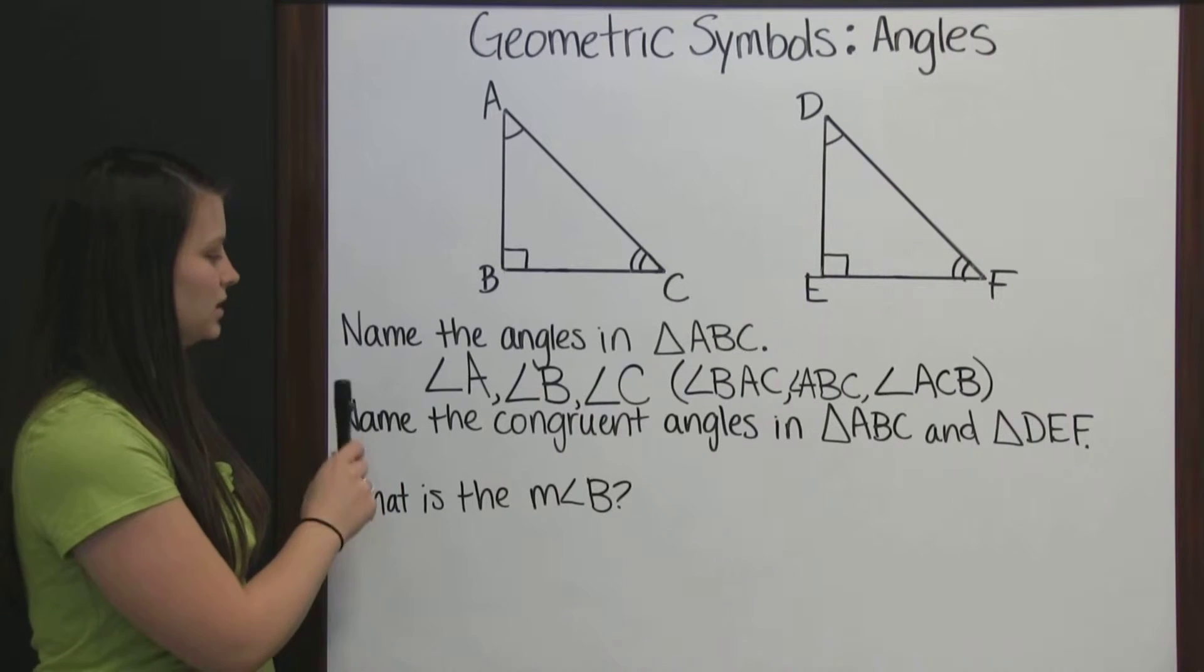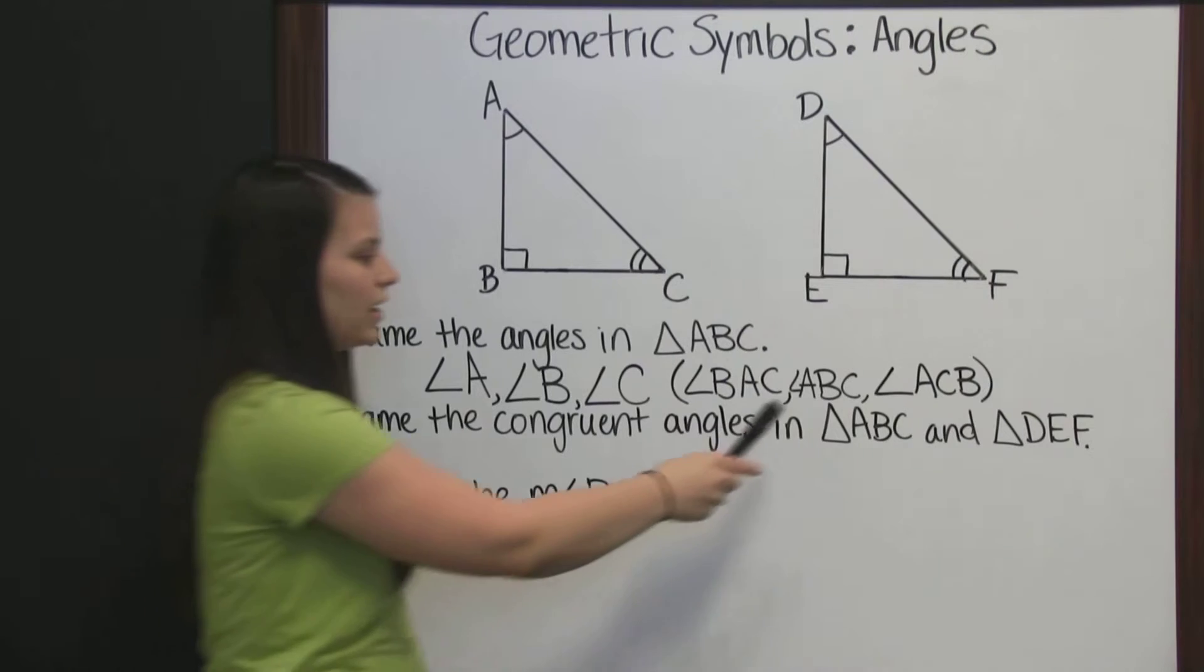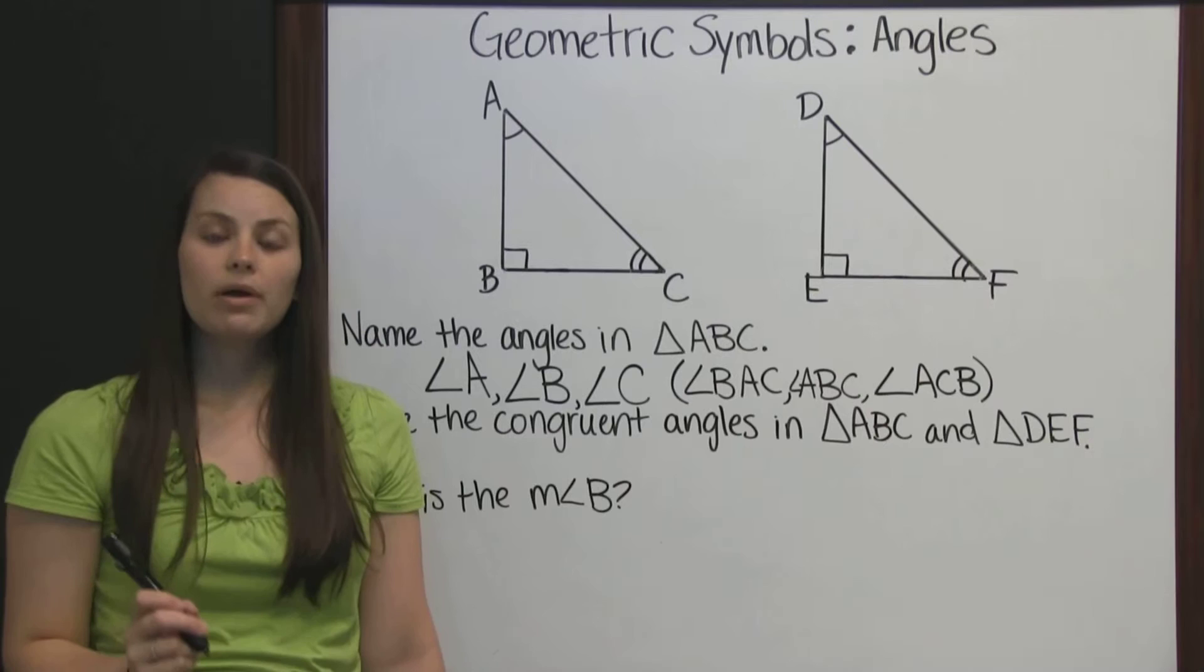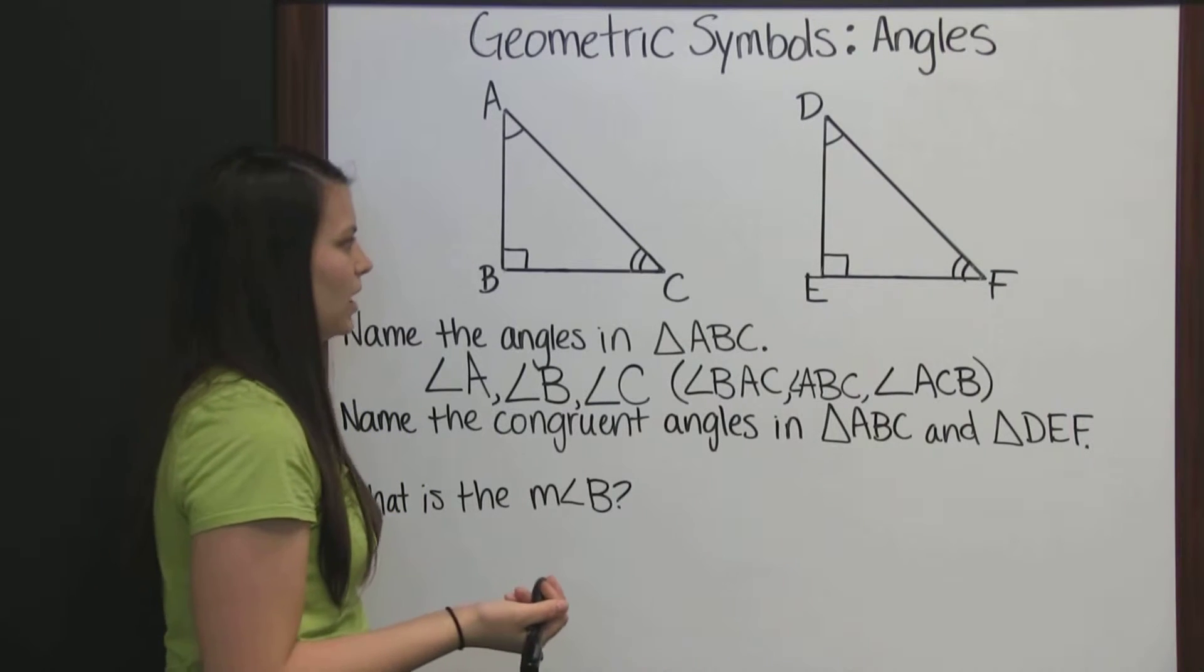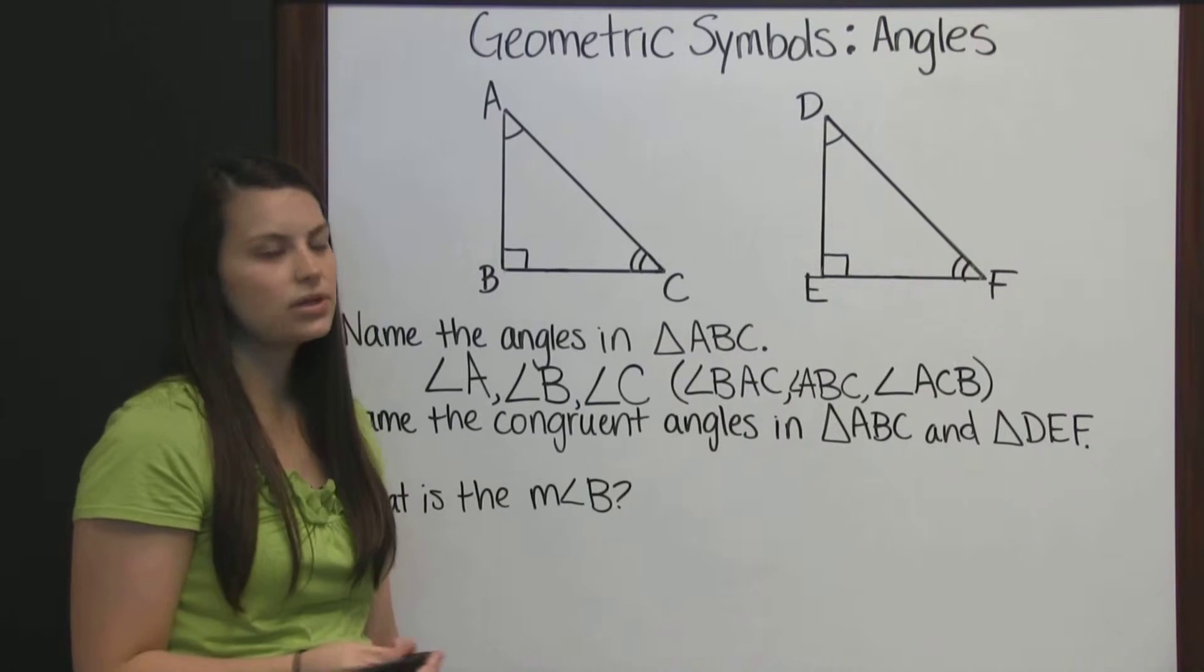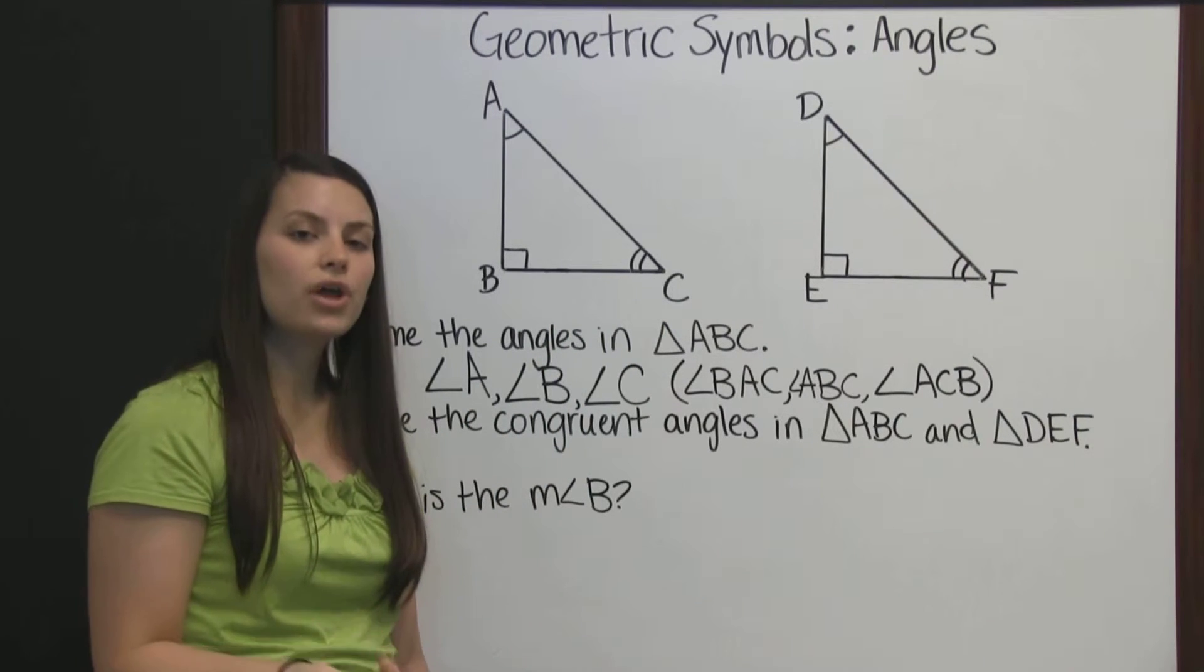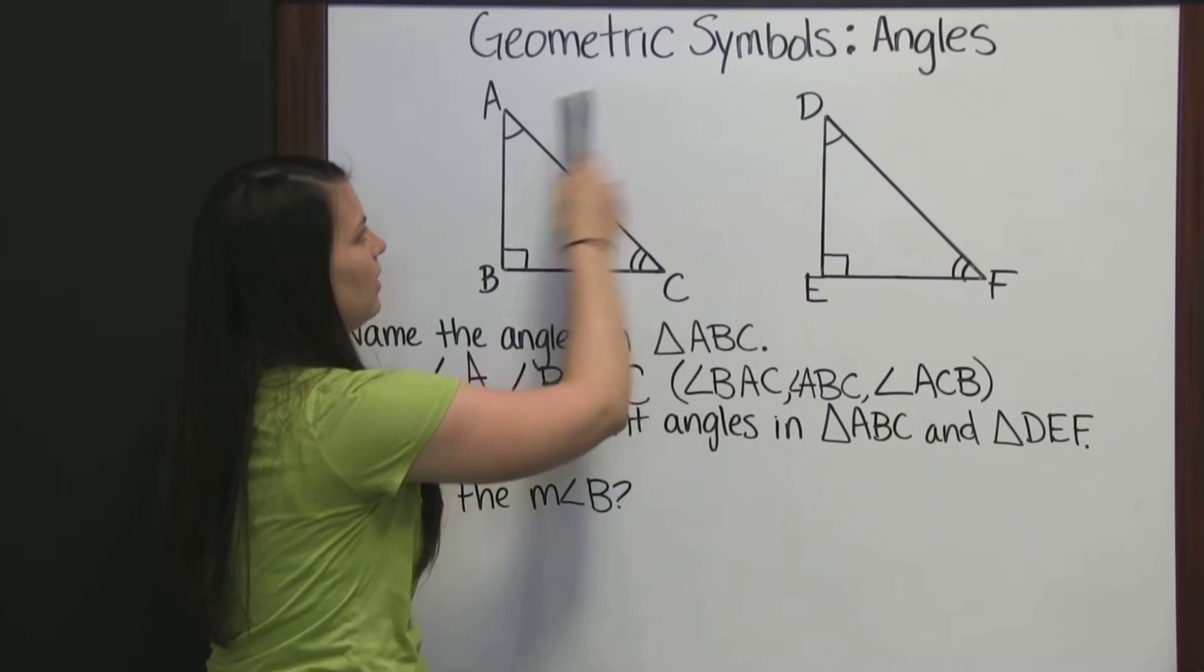Next, we need to name the congruent angles in triangle ABC and triangle DEF. Congruent means the same or equal, exactly the same. Congruent angles are sometimes marked for you on pictures, and you'll know which angles are congruent because they'll be marked in the same way.